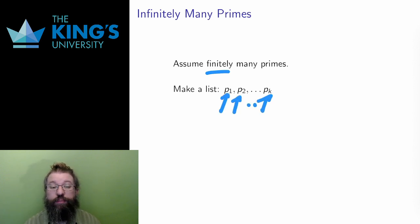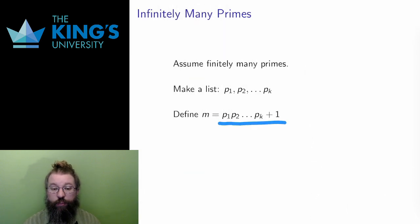p1, p2, up to pk. I don't know how many there are, but the assumption says only finitely many. So the list stops somewhere, which I call the index k. Then I consider a very large number formed by multiplying all these together and adding 1. So the number m is p1 times p2 times all the way up to pk plus 1.